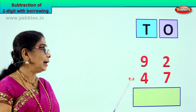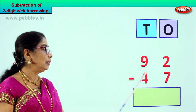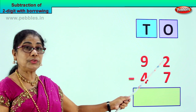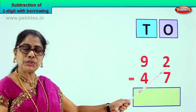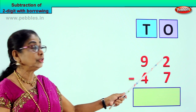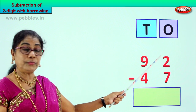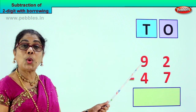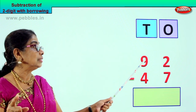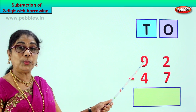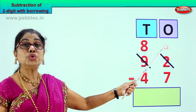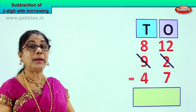Let's look at another sum: 92 minus 47. In the ones place you have 2 ones and 7 ones. 2 is small, 7 is big — you cannot take away 7 from 2. The first number should be big. Therefore we will borrow 1 from the tens place — there is 9 here. We take away 1 ten, then it becomes 8 tens balance. The 1 ten we take to the ones place: 1 ten plus 2 becomes 12.